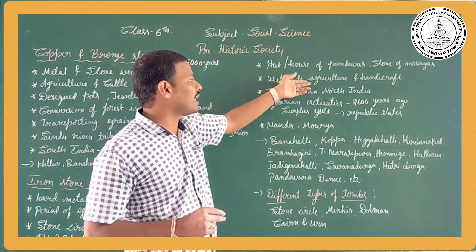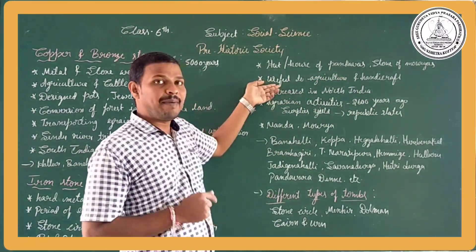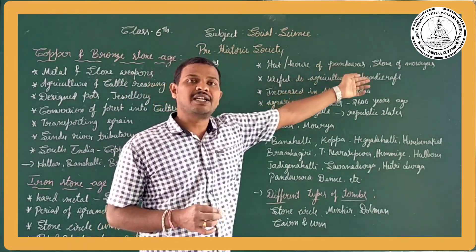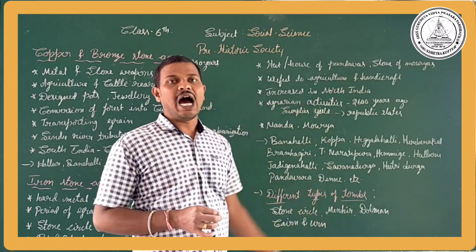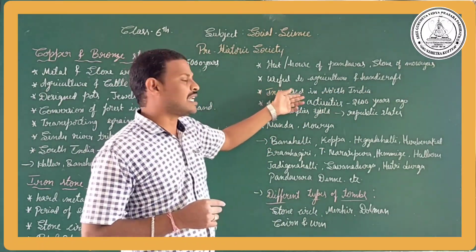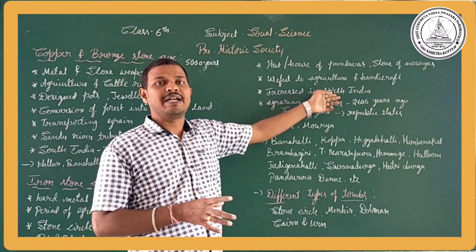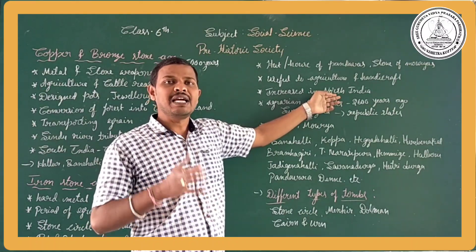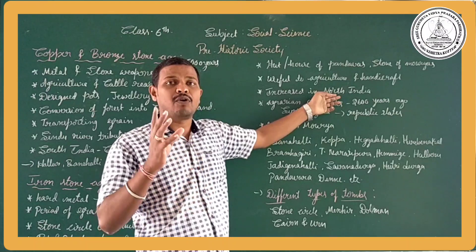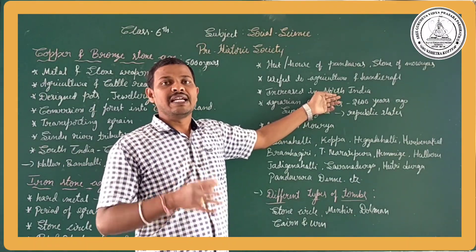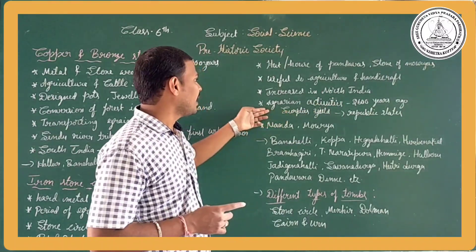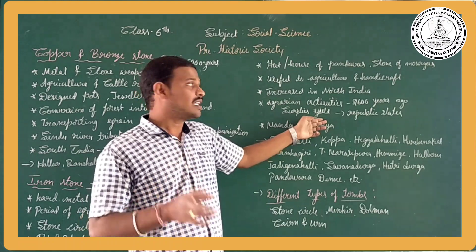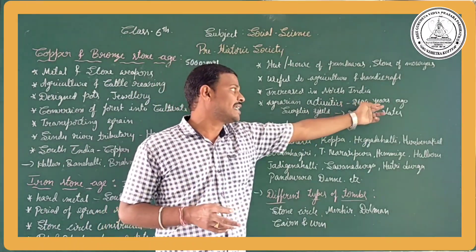Iron was useful for agriculture and handicrafts, so they always used iron metal. Iron use increased to North India as well. Before, almost all South Indian people only used iron, but later North India people also used iron. Agrarian activities and surplus production are also found in this period, along with Republic states before 2600 years ago.